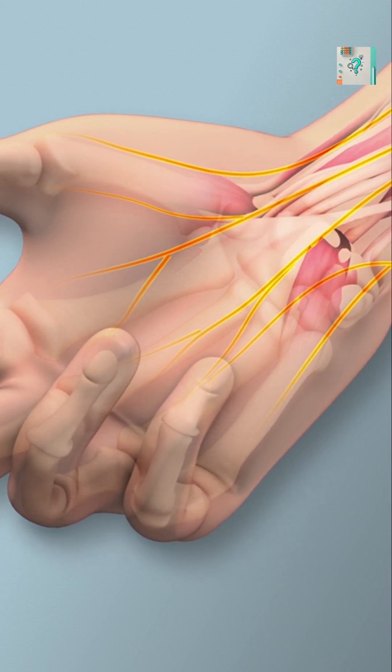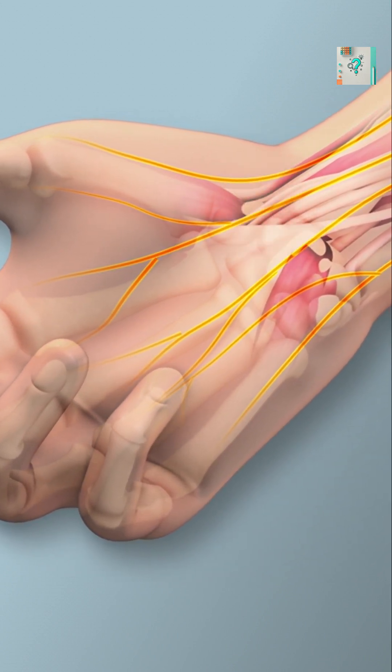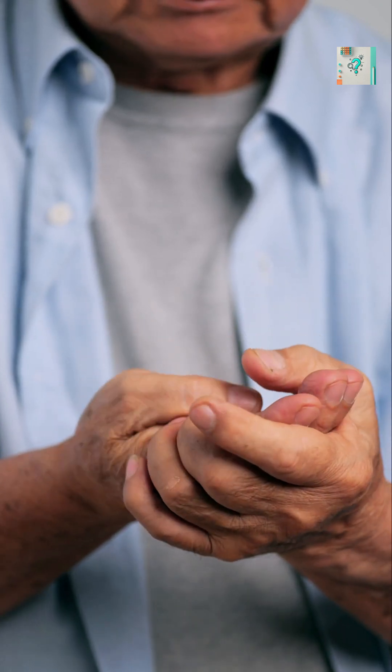Instead of normal sensation, the brain receives bursts of chaotic electrical activity. We interpret this mix as tingling, prickling, or buzzing.